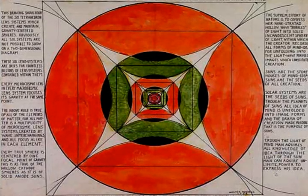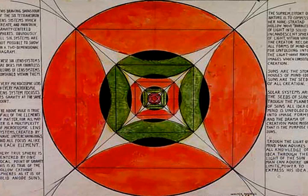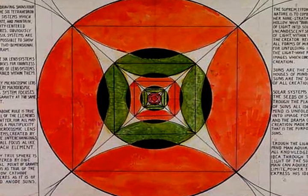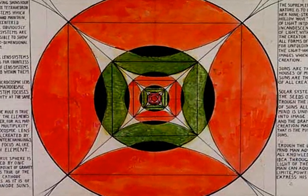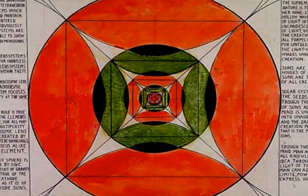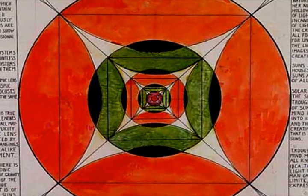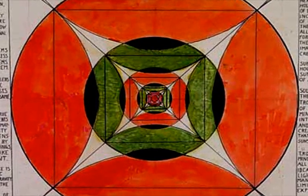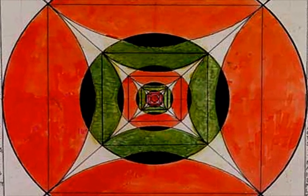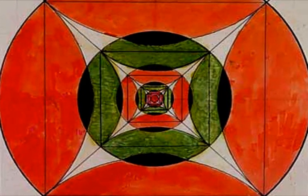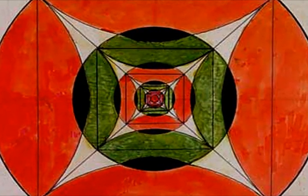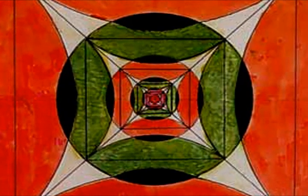This image illustrates how the six polyhedron lens systems of the cube create and maintain gravity-centered spheres — only four can be pictured here. These six lens systems are lenses for billions of lens systems contained within them. Every microcosmic lens in every macrocosmic lens system focuses its gravity at the same point.